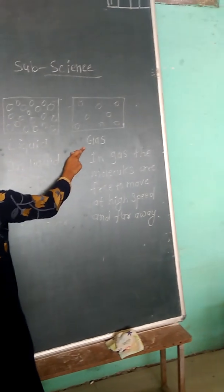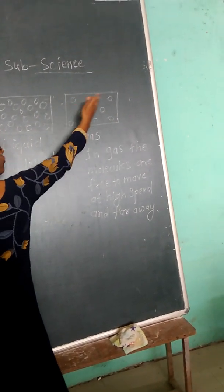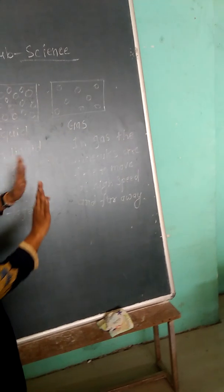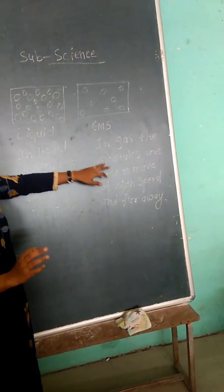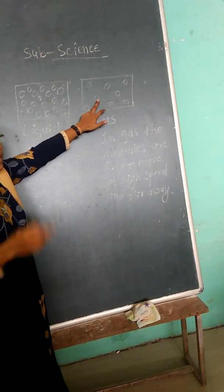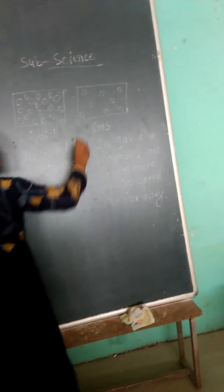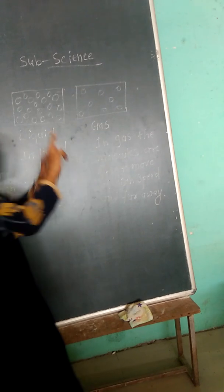And in gaseous state, molecules are free to move. Every molecule is free to move in high speed. At high speed these molecules are free, far away. In gaseous state, you have to see the air, those are around us.